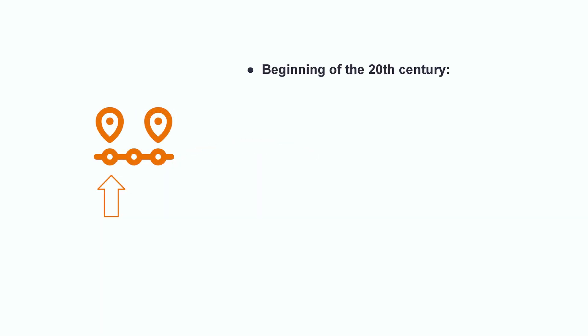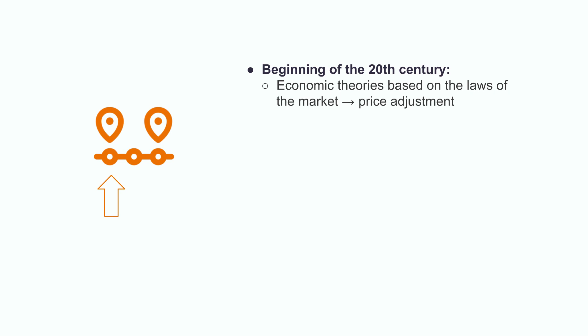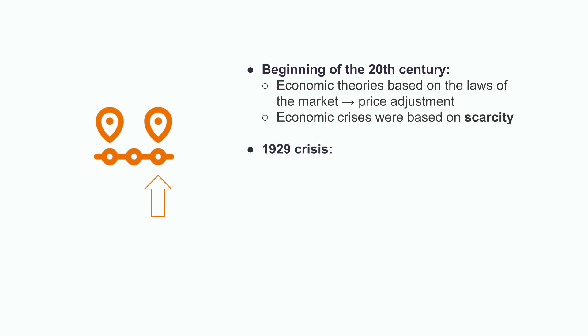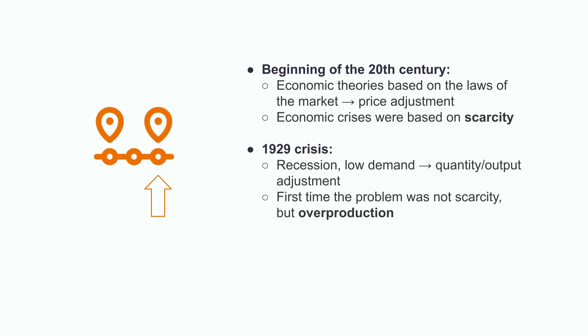At the beginning of the 20th century, the economic conception was based on the laws of the market, where supply and demand were balanced with the price variable as the adjustment mechanism. Until that time, economic crises were based on scarcity, since production did not go hand in hand with population growth. With technological advances and the opening of international trade, these things changed. The economic crisis of 1929, which originated in the United States, led to a worldwide recession. It was here that for the first time the problem was not scarcity, but overproduction — total production was not meeting demand. The drop in demand caused a drop in production, and this was the first sign that adjustments began to be made in the quantity produced and not in prices.